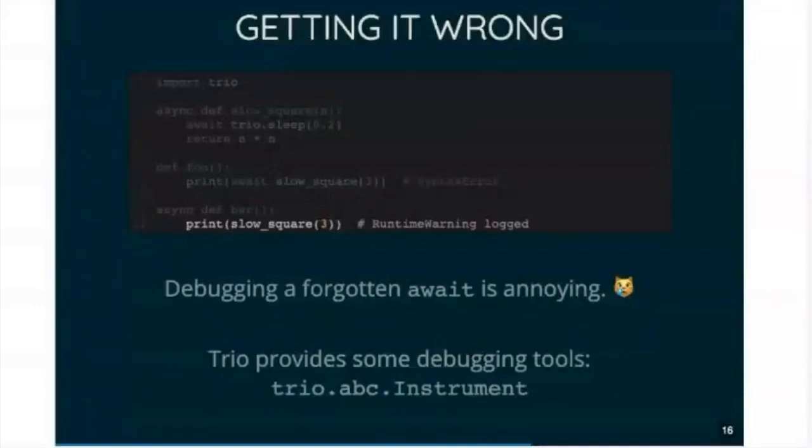But Trio does provide some tools for debugging stuff. I'm not going to talk about Trio.abc.instrument anymore on this talk, but it is incredibly useful and the docs explain how to use it. So if you find yourself with code that seems to be doing weird stuff, it might be a bit starting point for debugging.